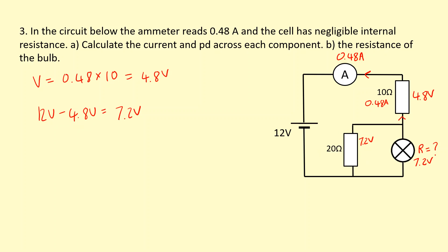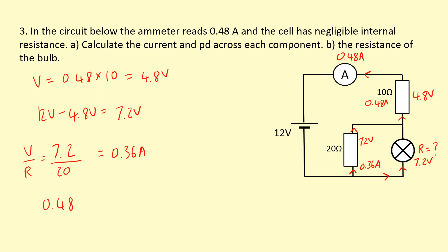Now I know two things for the 20 ohm resistor, so I can work out the current through it: 7.2 divided by 20 gives 0.36 amps flowing through that one. The rest of the current needs to go through the bulb. The total current in the circuit is 0.48, so 0.48 minus 0.36 means 0.12 amps is flowing through the bulb. Now we know two things about the bulb, so R equals V over I, which is 7.2 over 0.12, giving 60 ohms.